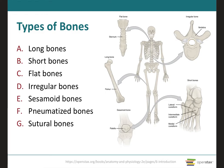Bones can also be classified according to their shape. An adult skeleton has 206 individual bones, which come in a variety of sizes and shapes. It is important to know the specific bone features common to each bone, as this helps us identify each one. Moreover, each individual develops unique bone features, which can be helpful in identifying a specific person.